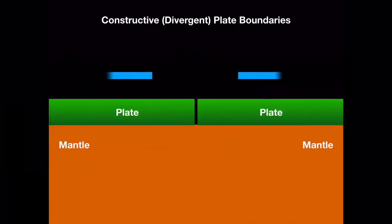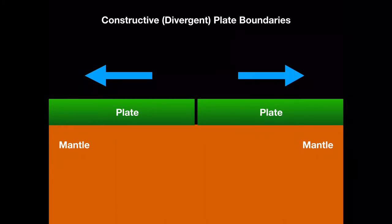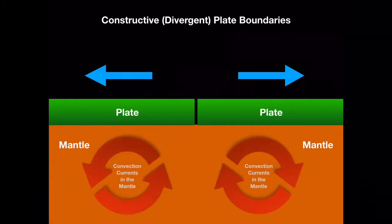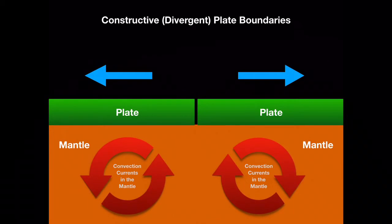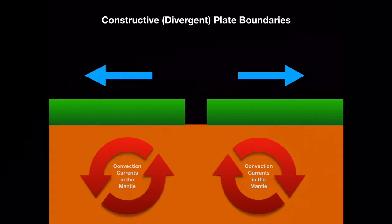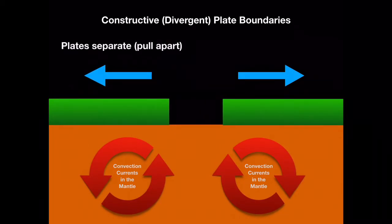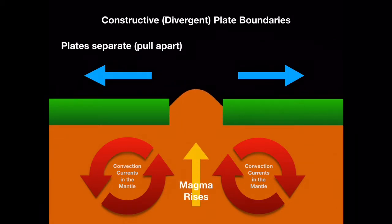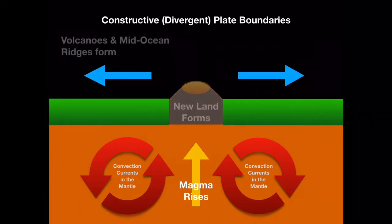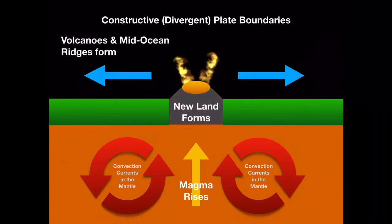Plates separate at constructive or divergent boundaries. This is driven by convection currents in the semi-molten mantle. At these boundaries, new land is created. As the plates separate at the boundary, magma rises to the surface. The lava will cool and solidify to create igneous rock and form volcanoes and mid-ocean ridges.